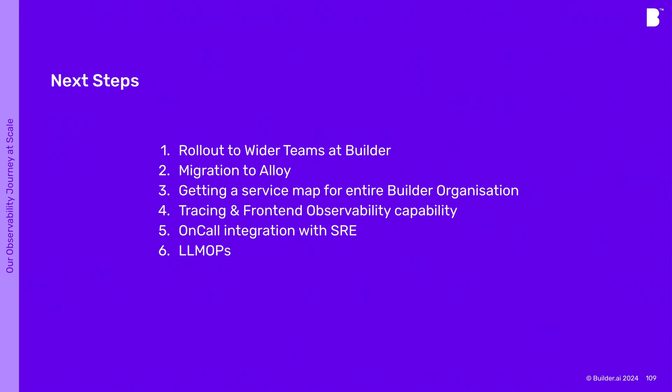We have a site reliability engineering team. We are trying to get them hooked onto the on-call system in Grafana Cloud so that we can start reporting partial outages. The wonderful AI features we saw earlier today around how we can generate outage reports is quite useful, because we can then actively talk to our customers and show them what is happening with the stack.